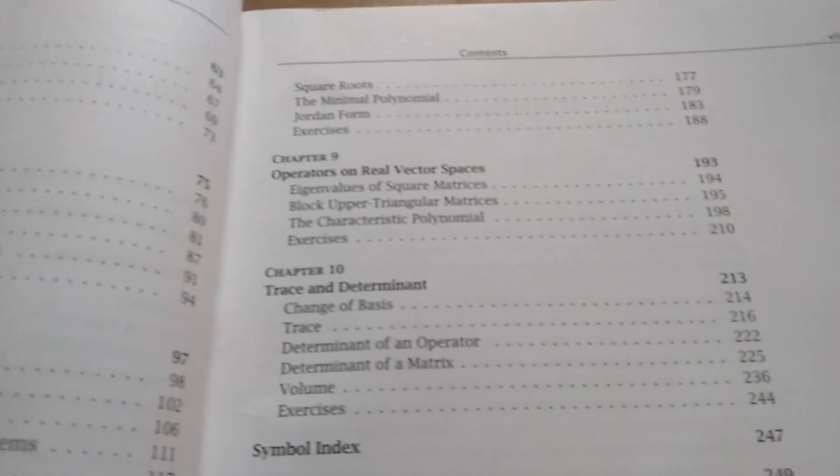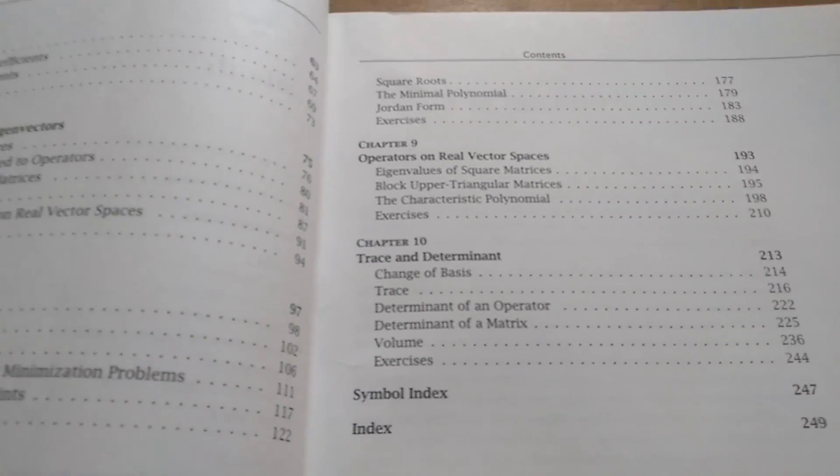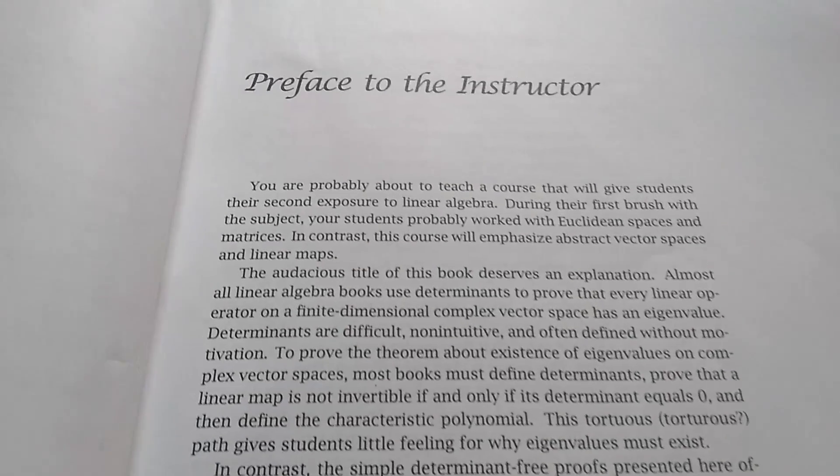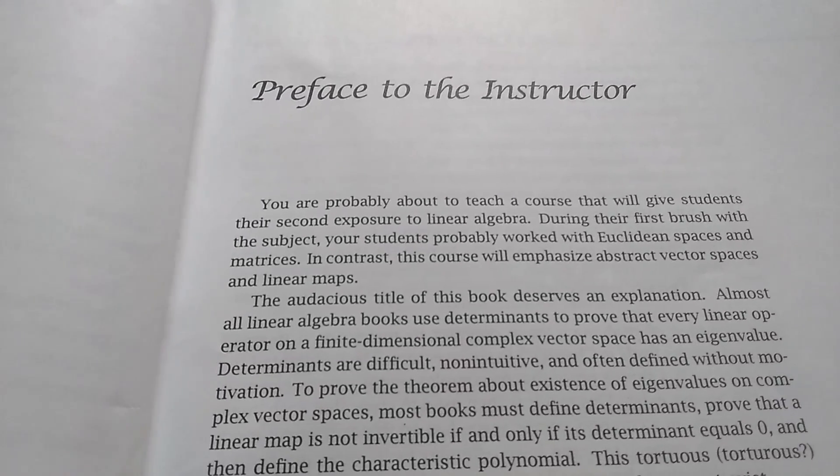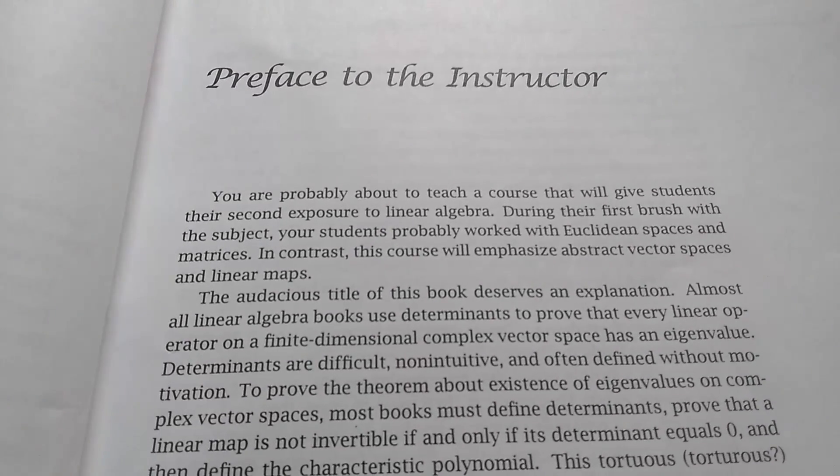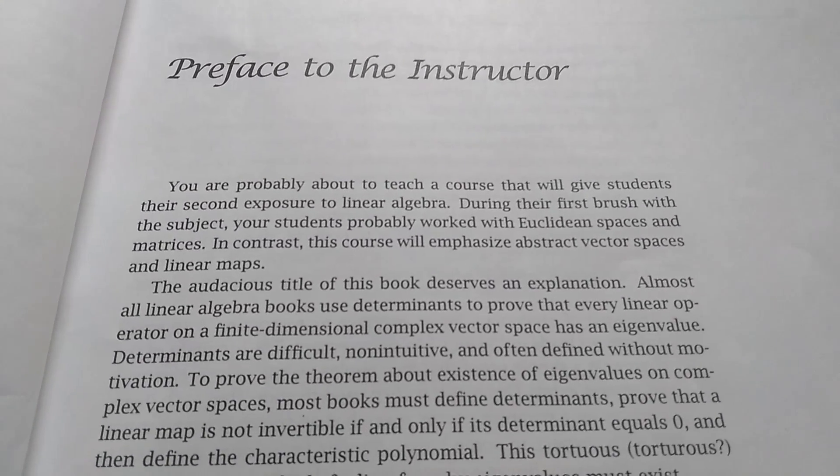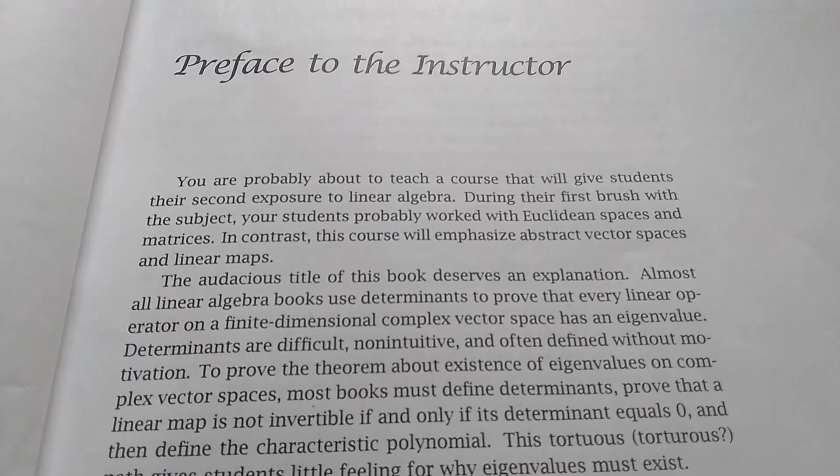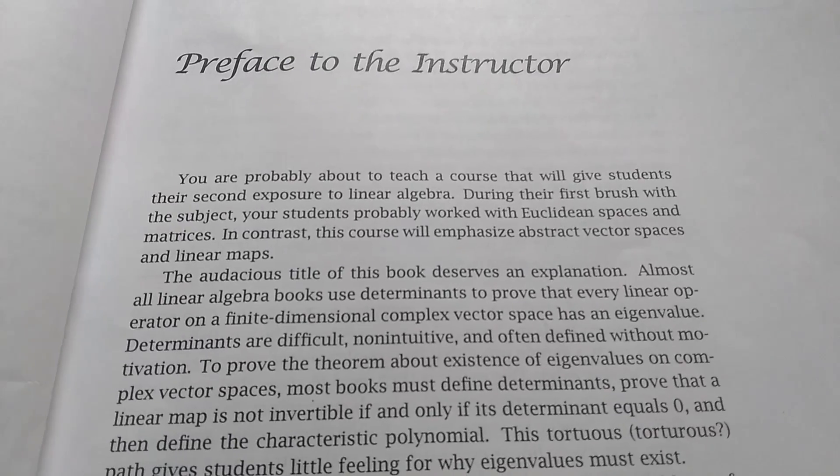And then trace and determinant. So it doesn't talk about determinants until chapter 10, and that's what makes this book so different. The author clearly states in the preface to the instructor: you are probably about to teach a course that will give students their second exposure to linear algebra. During their first brush with the subject, your students probably worked with Euclidean spaces and matrices. In contrast, this course will emphasize abstract vector spaces and linear maps.